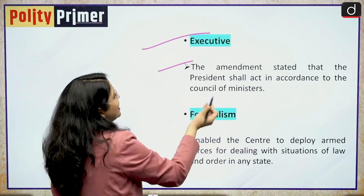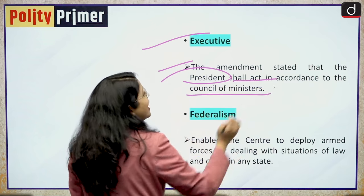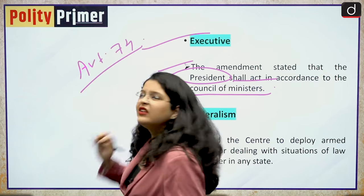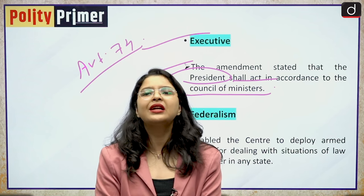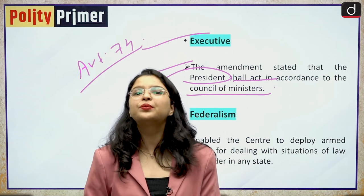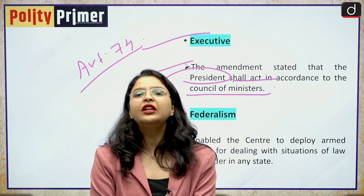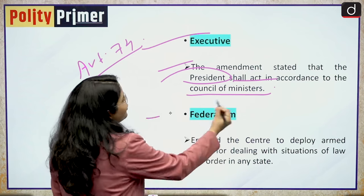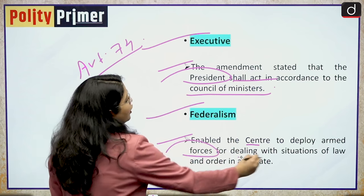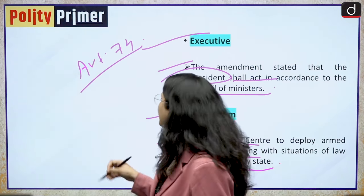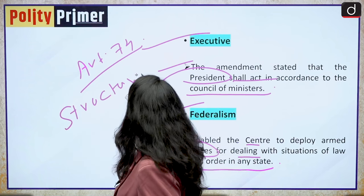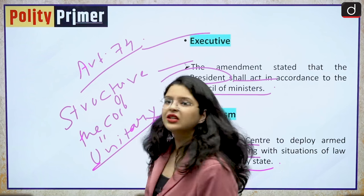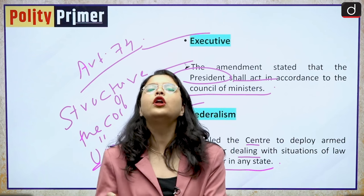Moving forward to the executive. The amendment stated that the President shall act in accordance with the aid and advice of the Council of Ministers, changing Article 74 of our Indian constitution. Previously there were no discretionary powers in the hands of the President, but this was made explicit by this constitutional amendment. Now the President was bound by the aid and advice of the Council of Ministers. On federalism, it enabled the centre to deploy armed forces for dealing with situations of law and order in any state, shifting the structure of the constitution from quasi-federal to unitary centralized in nature.